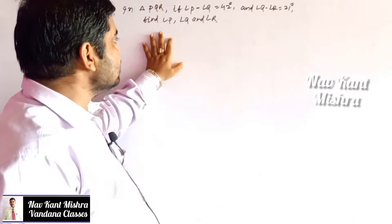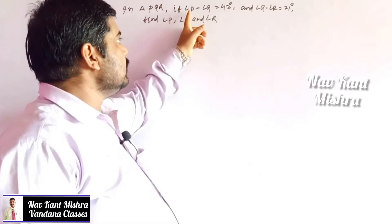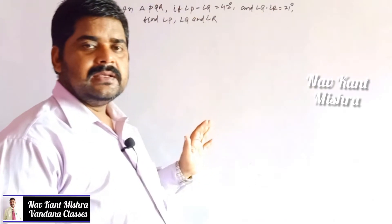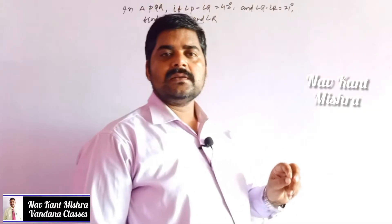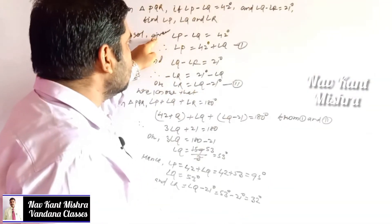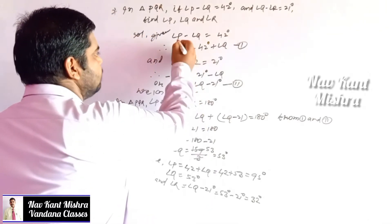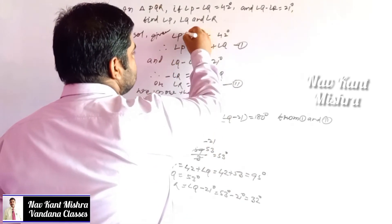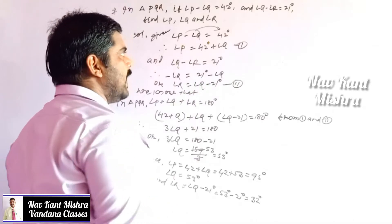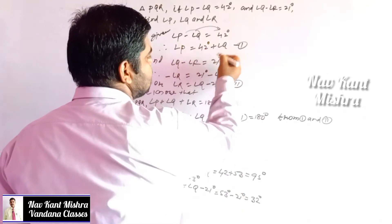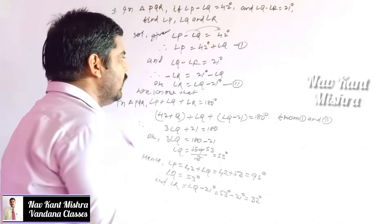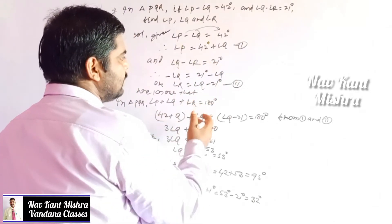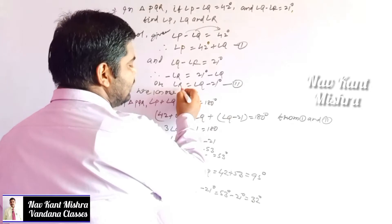In the next question, in triangle PQR, angle P − angle Q = 42° and angle Q − angle R = 21°. You need to find angle PQR. Rearranging the first condition: angle P = 42 + angle Q ... (equation 1). Rearranging the second: angle R = angle Q − 21 ... (equation 2).